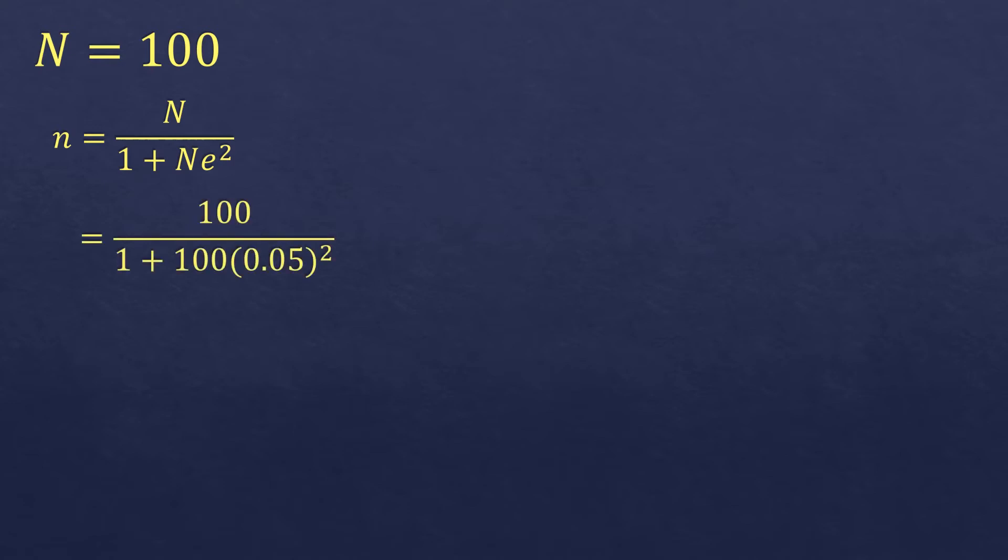We're going to substitute the population, or the N, capital N, for 100, and let's say this is a social science study, so we're going to use 5% margin of error. First you're going to compute the 0.05 squared, which is 0.0025, and then multiply 100 by 0.0025 at the denominator, so it will be 0.25.